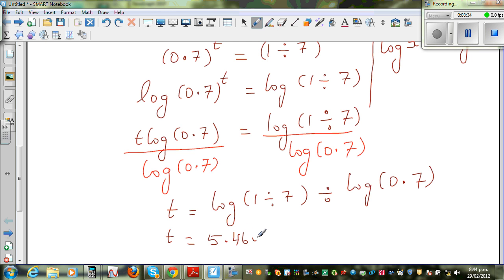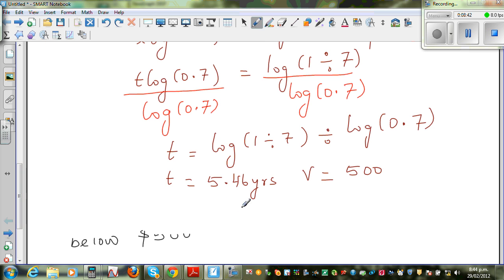So when t = 5.46, in 2 decimal places, your V is exactly $500. So the question is, when would it go below 500? This is about 5 and a half years, 5.5 years. That is 5 and a half years, or 5 years and 6 months.